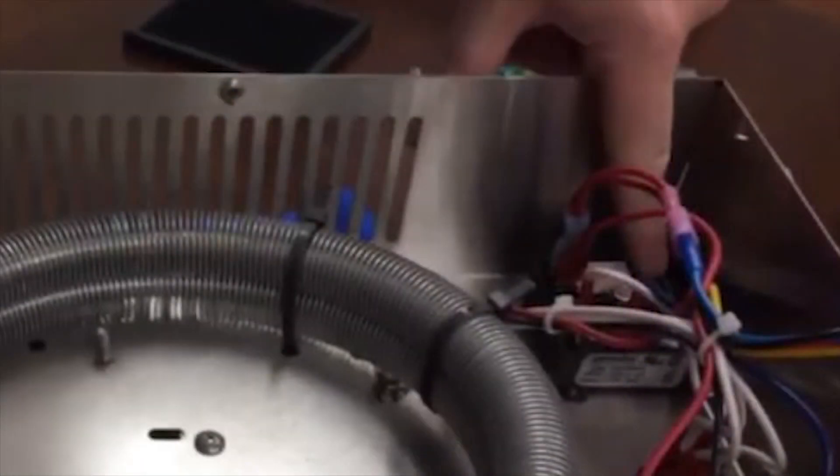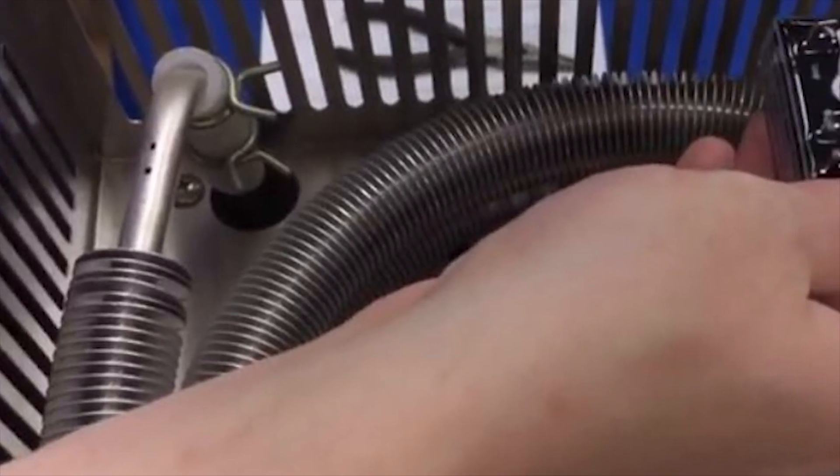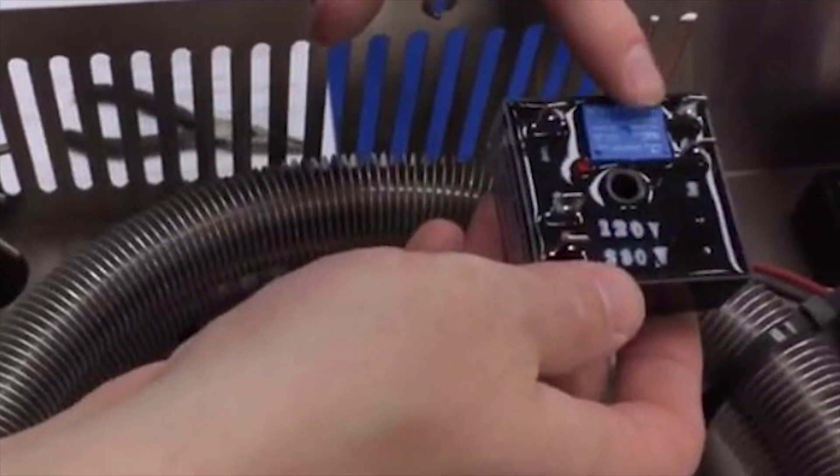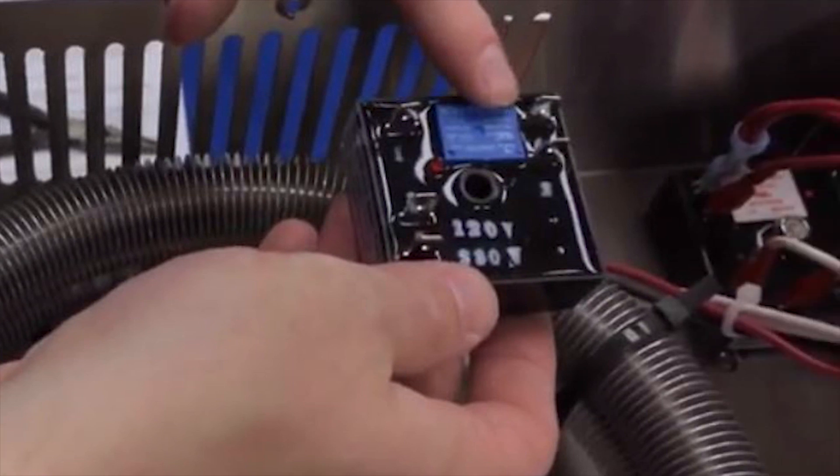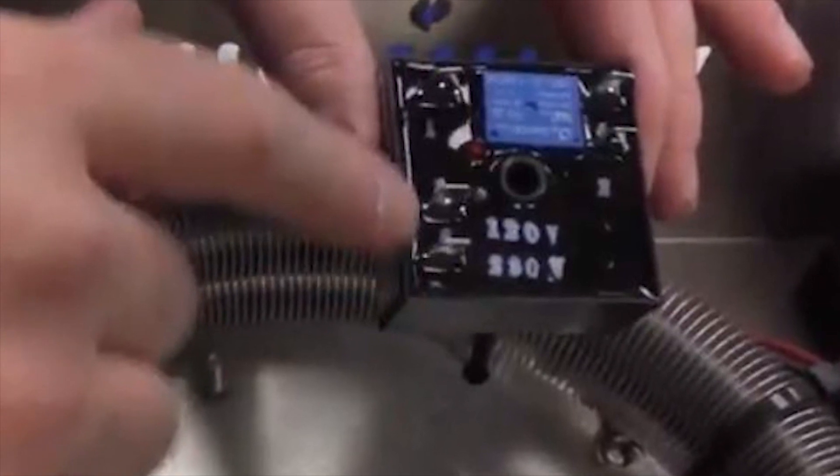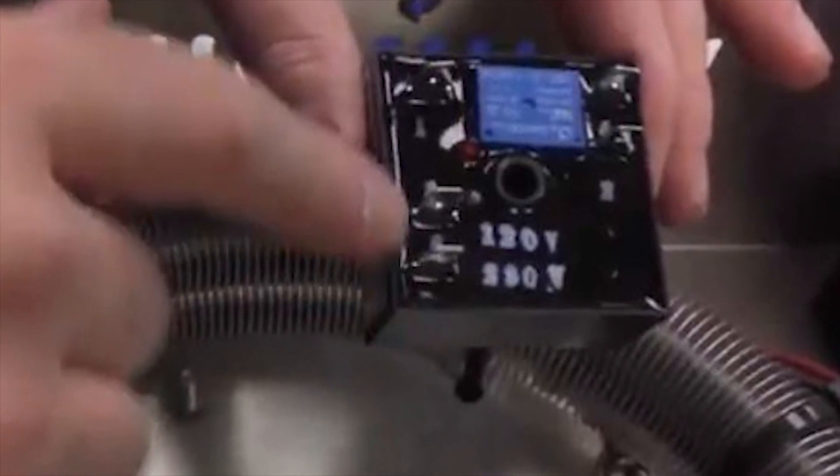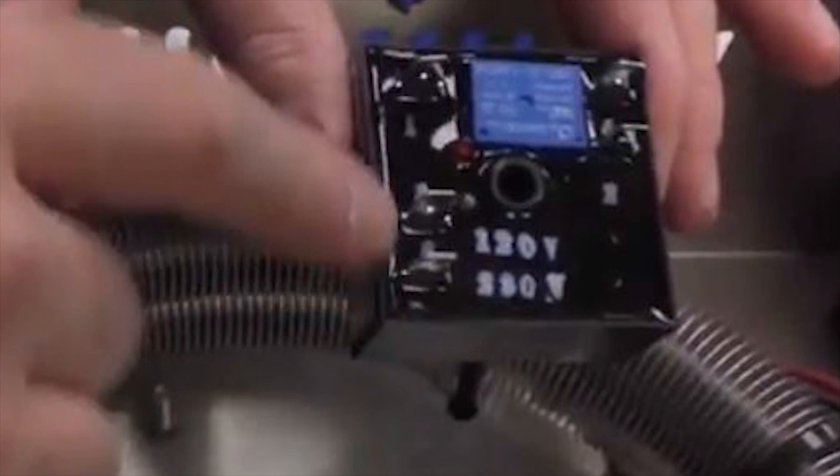Here you'll notice your timer is right here. Pull out your new timer and see the differences. The new one has blue and the old one has white. If you notice, this one has 120 and 230 volt, which means this timer works for both a 120 volt and 230 volt machine. This is a 120 volt unit so we'll be connecting it as such.